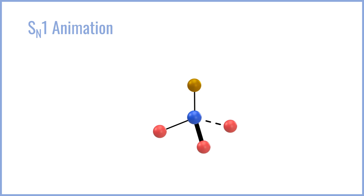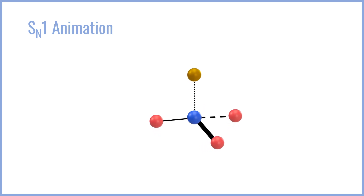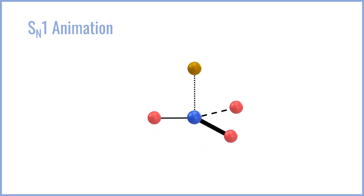The final thing I want to leave you with is this quick animation overview of everything we've talked about with the SN1 reaction, which is going to show the bond rupture, the nucleophilic attack, and the racemization of the stereocenter. Initially, the bond will begin to rupture, leading to a polarization of the bond with the anionic character on the leaving group.